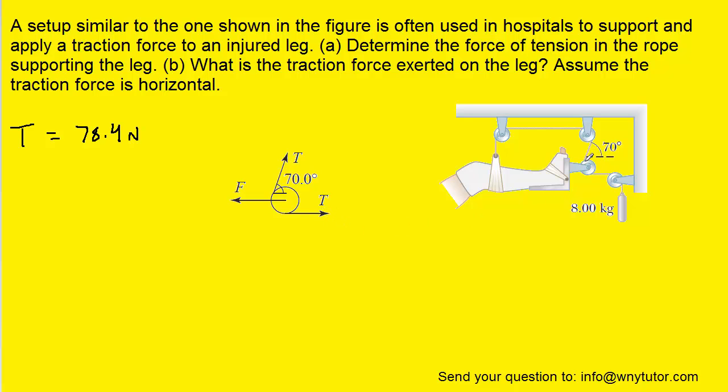we can see that the tension in the rope right here would be pulling on the pulley up and to the right. And then the tension in the rope on this side of the pulley would be pointing to the right directly. The leg is actually pulling on the pulley to the left, and that's the force that we've indicated with the letter F here.